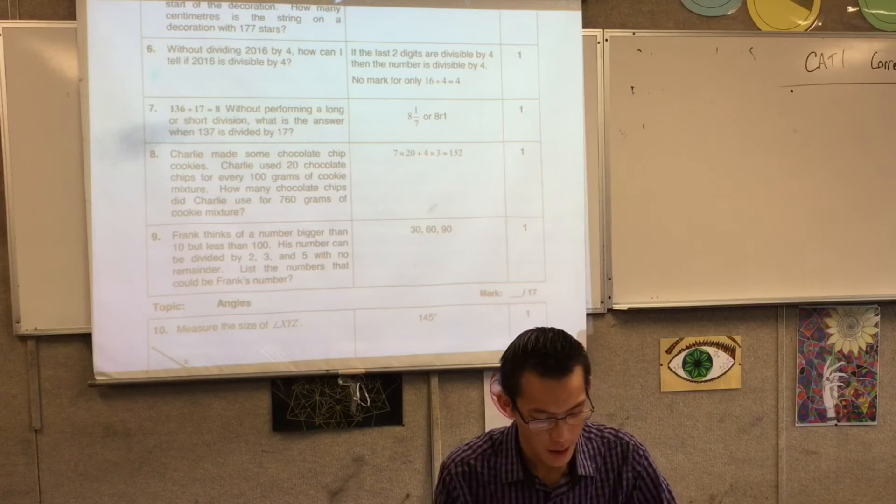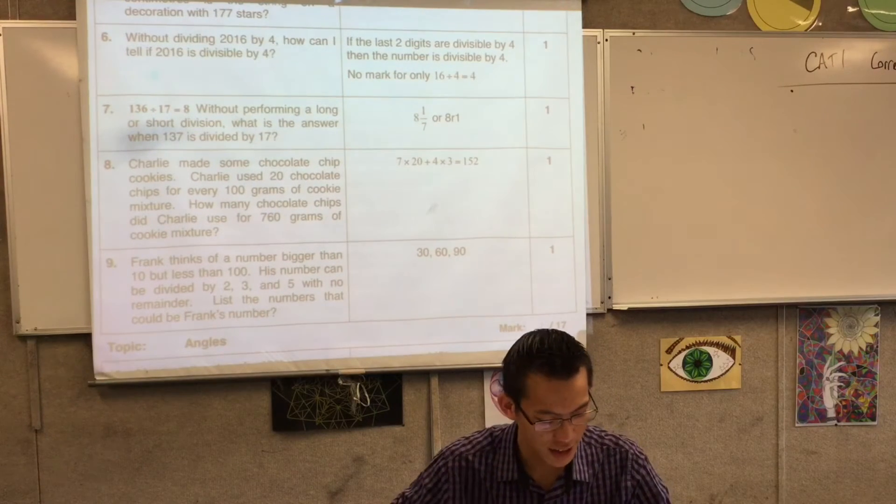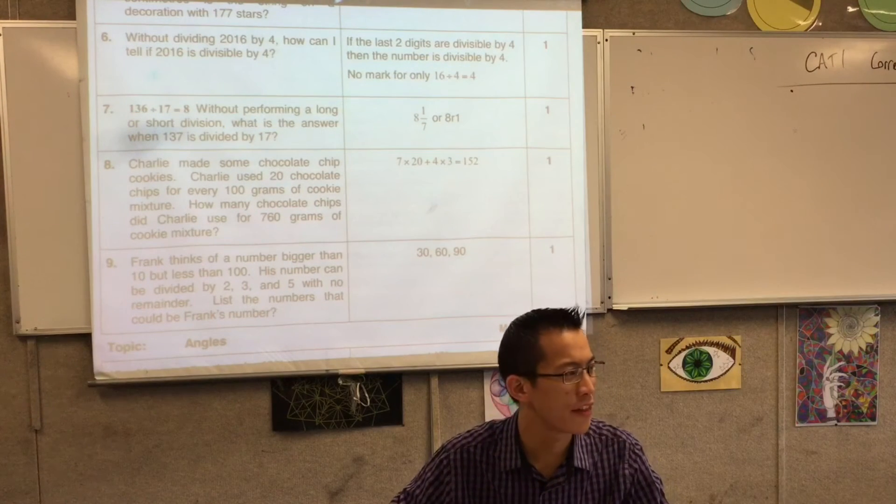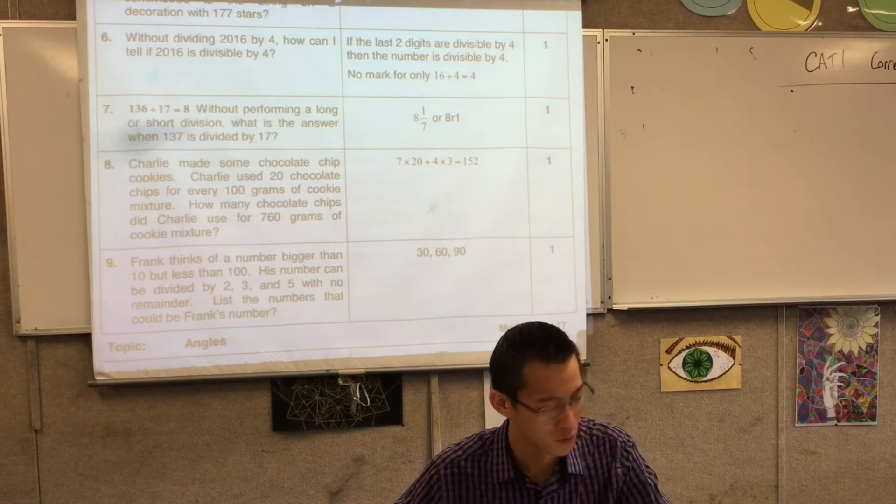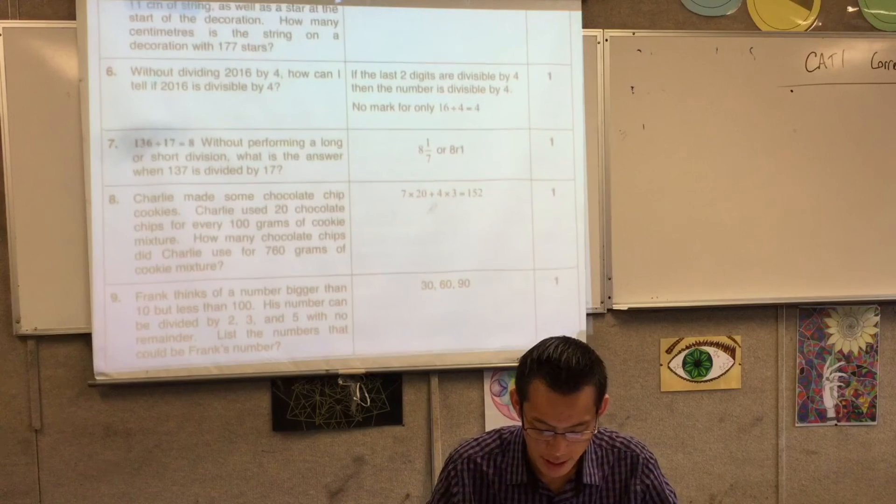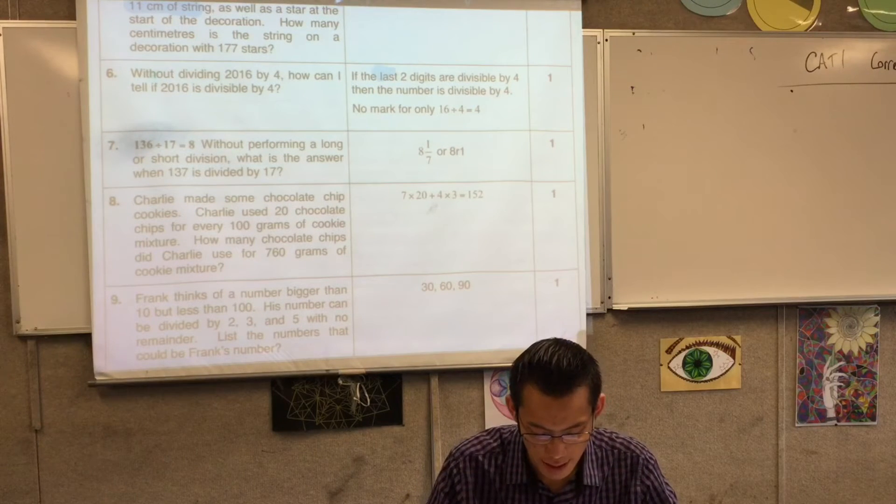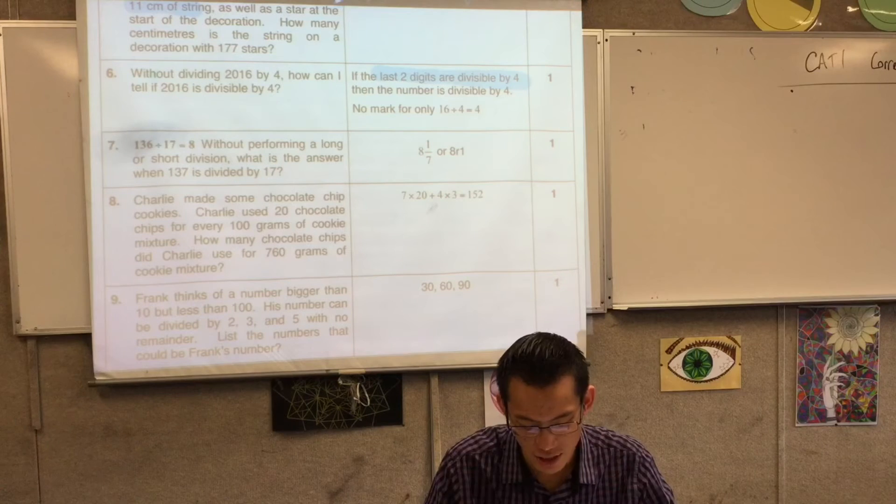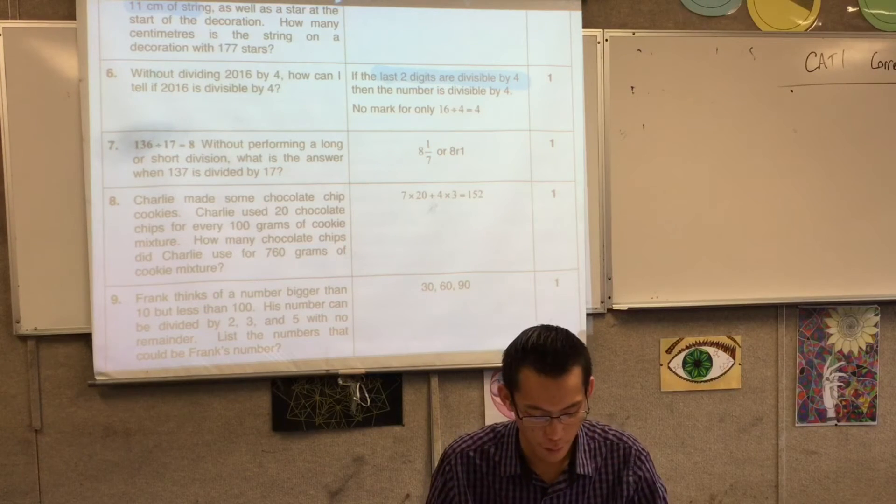Number six, without dividing through, how can we tell? So do you remember? This is about the divisibility tests. We have divisibility tests for two, three, four, five, six, et cetera. So the idea was to say what you're looking for are the last two digits being divisible. That's the divisibility test for four.